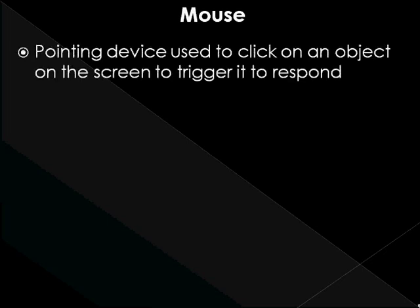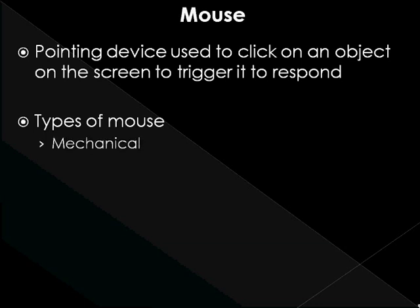Mouse. A mouse is a pointing device that controls the movement of the cursor or pointer on a display screen. It is used to move an electronic pointer, called a cursor, around the screen or click on an object or option on the screen to trigger it to respond. Types of mouse are as follows. Mechanical: has a rubber or metal ball on its underside that can roll in all directions. Mechanical sensors within a mouse detect the direction the ball is rolling. Opto-mechanical: same as a mechanical mouse, but uses optical sensors to detect motion of the ball. Optical: it has no moving parts; instead, it uses light-emitting diodes and photodiodes that emit and sense light to detect the mouse's movement.